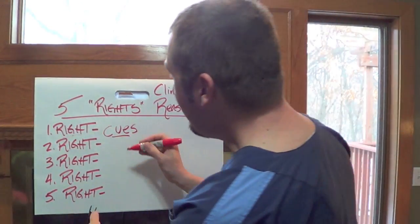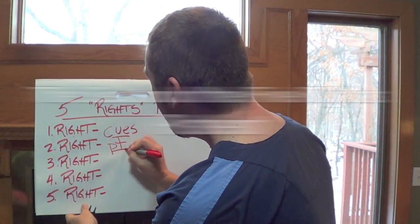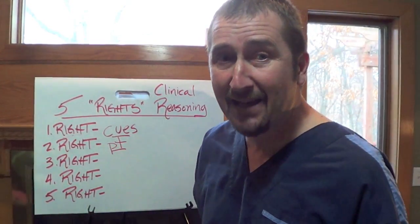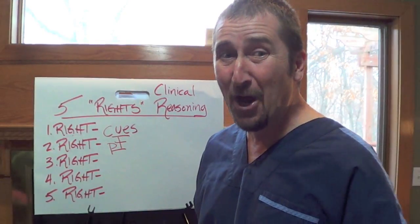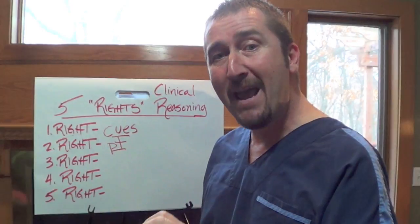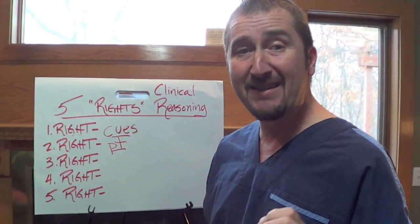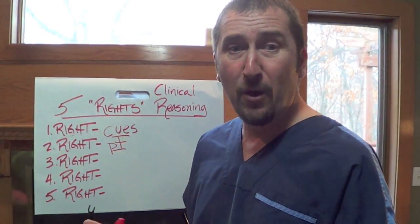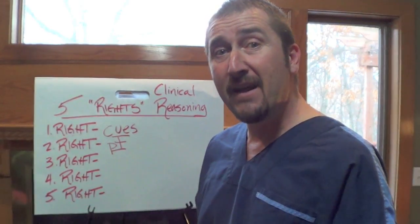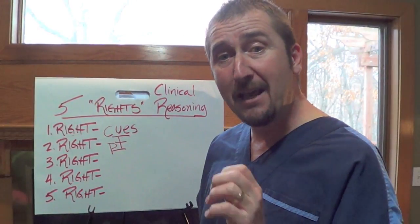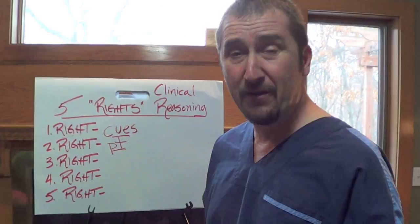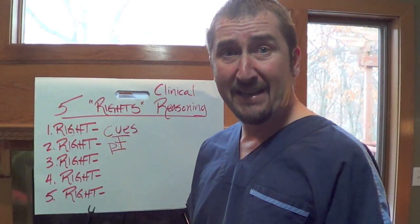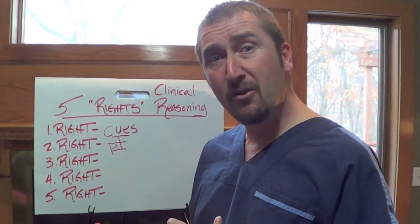The second right of clinical reasoning is the right patient. This right is not about checking the name and date of birth — that's the medication pass. Rather, it is about identifying whether your patient is at high risk for developing a potential complication. The nurse must recognize, for example, that an 18-year-old with an appendectomy is not as likely to develop a complication as a 78-year-old with the same problem. This also involves recognizing who is a susceptible host based on age, or whether they are immunosuppressed due to prednisone or HIV.